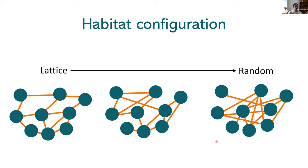The objective of this project was to answer the fundamental question of whether the configuration of links between habitat patches influences population spread. In designing this project, we wanted to know how organisms respond behaviorally to different habitat configurations. In a natural environment, habitat patches are geographically embedded and changing the configuration of links necessarily changes the length of those links. So it was important to consider how organisms respond to differences in link lengths and whether this response varies across species.